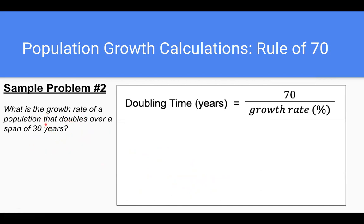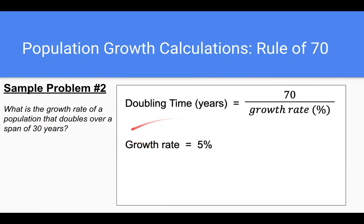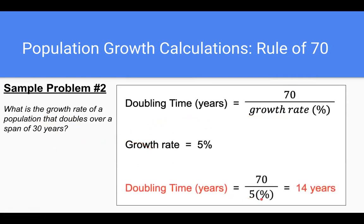I wrote the question wrong and didn't change it, but we know that the growth rate is 5%. We plug that five in — don't worry about the percent sign. The doubling time in years is equal to 70 over 5. When we do that math, it comes out to 14 years. So with a 5% growth rate, it's going to take 14 years for the population to double, which is pretty fast.